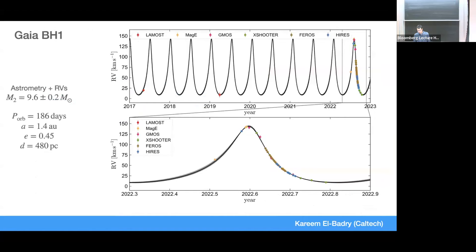One of the first exciting discoveries from this work was Gaia BH1. Shown here are the radial velocities fitting astrometry and radial velocities together as a function of time and phase. The astrometry constrains the 2D motion on the plane of the sky, while RVs constrain a third dimension. Putting them together gives a 3D constraint and a precise companion mass measurement. We get a little over 9 solar mass black hole, a half-year orbit, 1.4 AU separation, and pretty close to the sun — 480 parsecs.